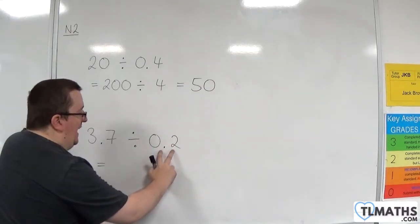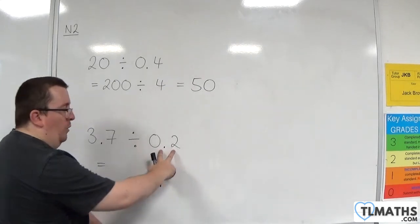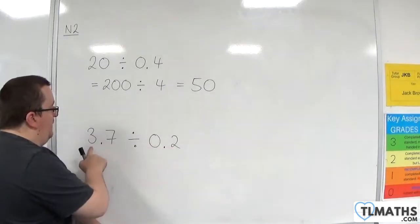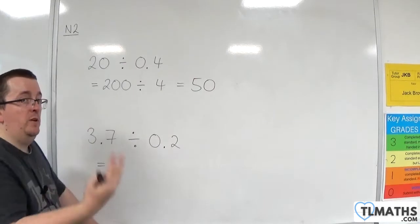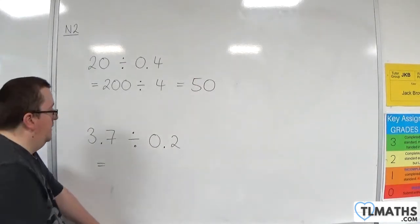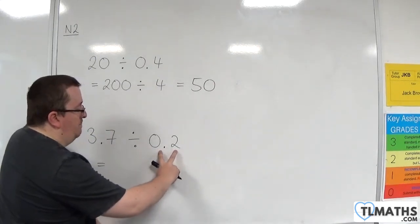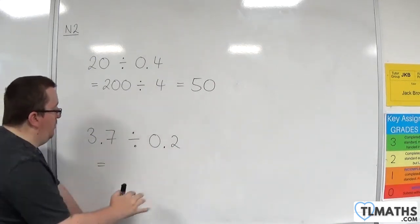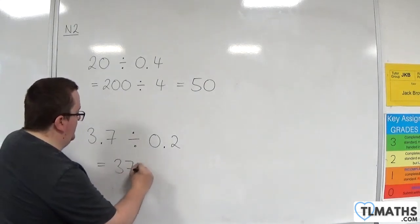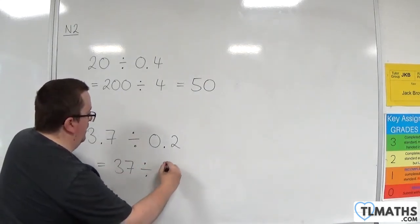Now, the reason here is to get rid of the decimal in what you're dividing by. If it had been 3.7 divided by 2, that would have been fine. We could do that. Essentially, this is what's telling you how much to multiply by. So I'm going to multiply both of them by 10. We get 37 divided by 2.